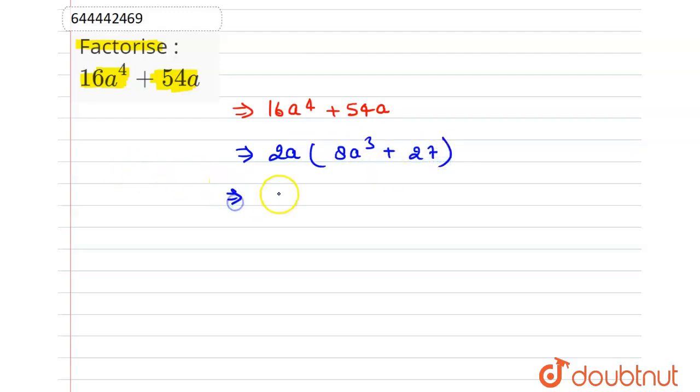Now we can write this above expression as 2a into this 8a cube, we can write it as the whole cube of 2a, plus we can write 27 as whole cube of 3.